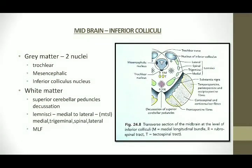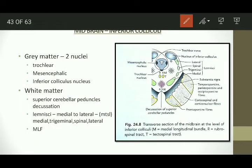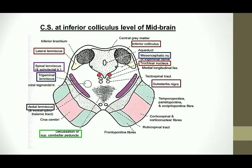The inferior collicular level of the midbrain has grey matter consisting of the fourth cranial nerve nucleus, the mesencephalic nucleus, and the inferior collicular nucleus. The white matter consists of the superior cerebellar peduncle decussation and various lemnisci from medial to lateral: the medial, trigeminal, spinal, and lateral lemnisci, as well as the medial longitudinal bundle. This is the line diagram of the midbrain at the inferior collicular level.